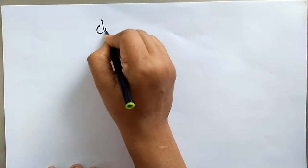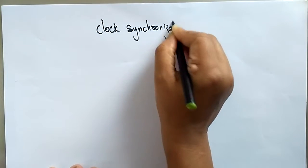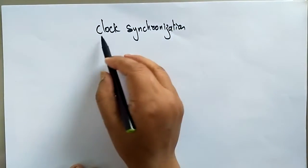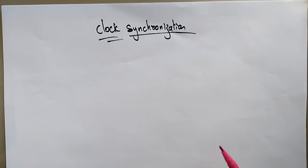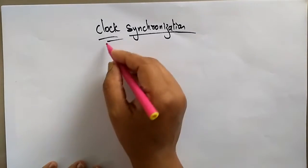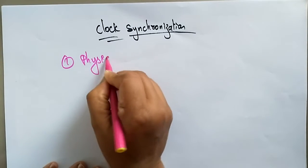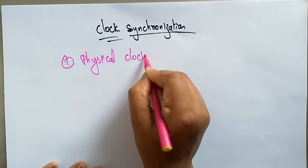Hi students, welcome back. Let's continue with clock synchronization. In the previous video I explained what exactly clock synchronization is. In this video I want to tell you the different techniques and properties that we use to maintain clock synchronization in a distributed environment. The different types of clock synchronizations are: one is physical clock synchronization.